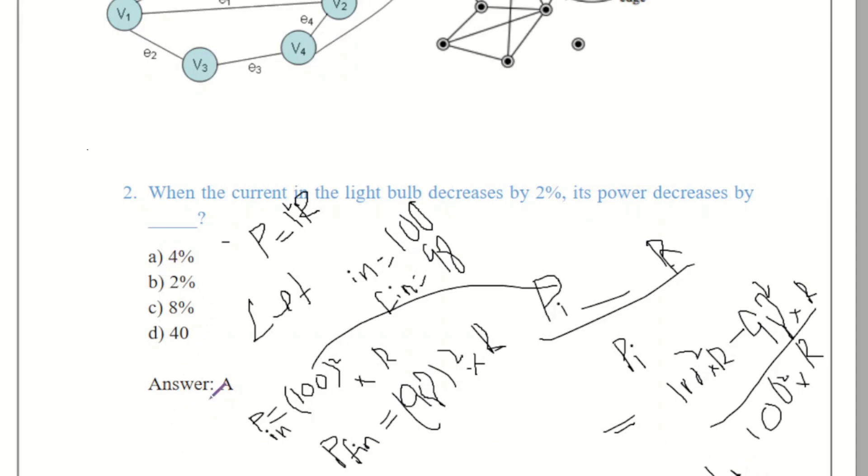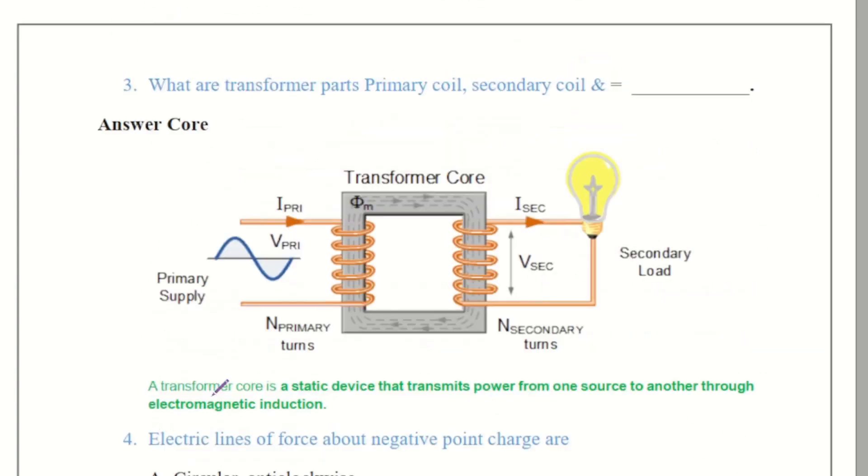Moving forward to the question number 3 that is what are the transformer's parts? Basically they have given two different transformer parts primary coil and secondary coil. They are asking the third primary coil. So the third main part of transformer is the core. So the transformer core is a static device that transmits power from one source to another source through the electromagnetic induction. Primary is at the left side and at the right side there will be the secondary core is in between. The transformer has three main parts.